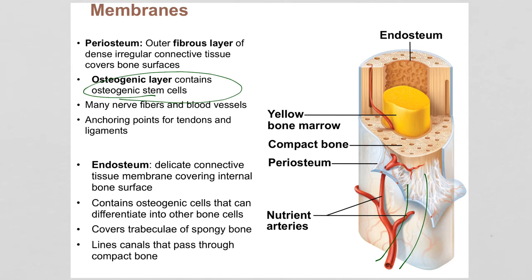The other important thing about periosteum is it contains osteogenic cells — 'genic' like genesis meaning to create, 'osteo' for bone. These are essentially bone stem cells that can replicate and differentiate to form new bone tissue. This is very important during childhood growth and equally important during adulthood when bone remodeling occurs. When bones are stressed, twisted, or compacted, they remodel to accommodate that stress. Any time the exterior of a bone is being built up or torn down, that's the periosteum cells doing the work.